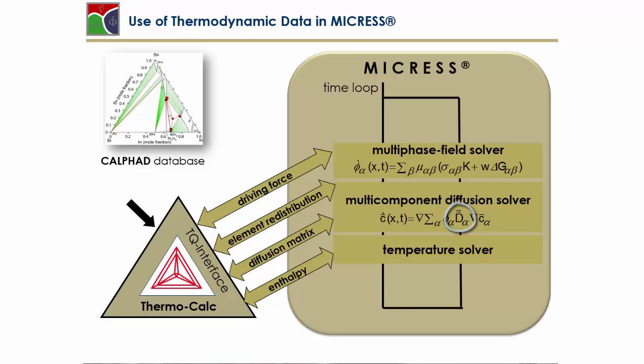Last but not least, we've got the enthalpy which can be taken from the databases and provides the latent heat associated with the phase transformation which enters the temperature zone. One important issue is that we can calculate the critical undercooling, the local deviation from equilibrium and the driving force for the nucleation. If this critical undercooling temperature is exceeded, a nucleus is placed into the system.